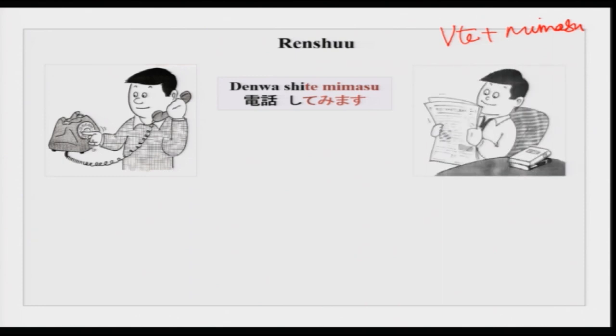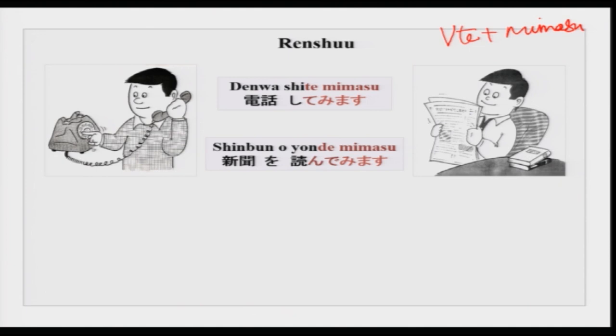You have this gentleman Tanaka-san reading a paper. Shinbun no yonde mimasu — what could the situation be? It could be kanji — kanji wa daijoubu desu ka, kanji yomemasu ka? Shinbun no yonde mimasu: I will see whether I can read or not.